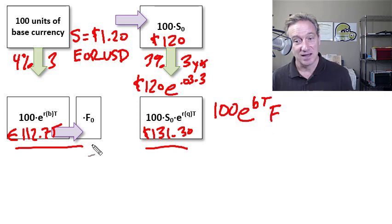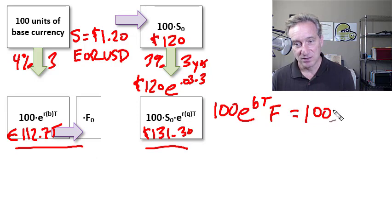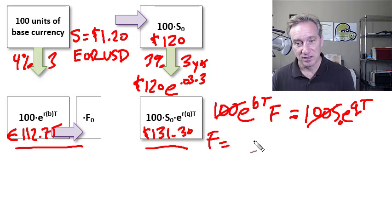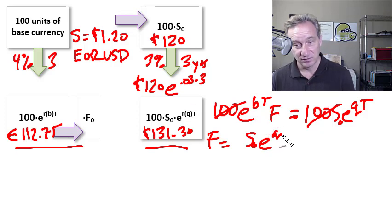But we do need to convert that at the forward price. And so on the right, that needs to equal 100 times the spot price times e raised to the quote currency times T. So these will be equal. That will enforce my indifference as of time zero. And we want to solve for the forward price.